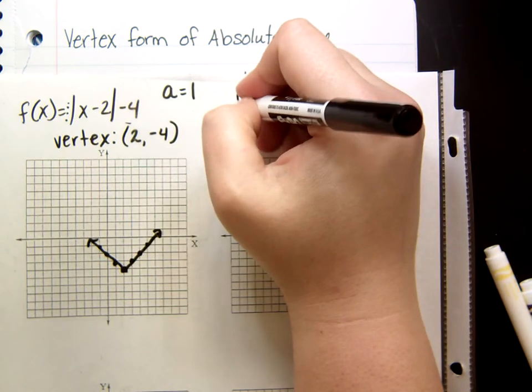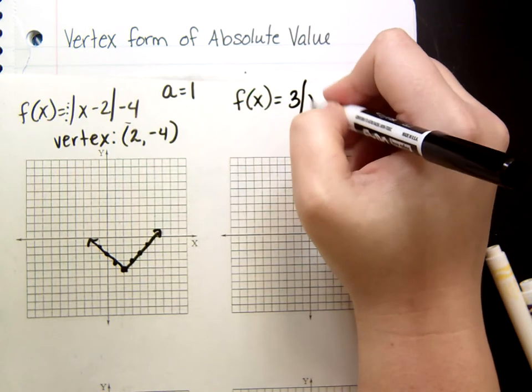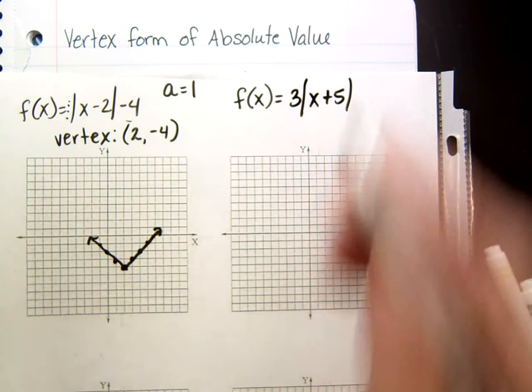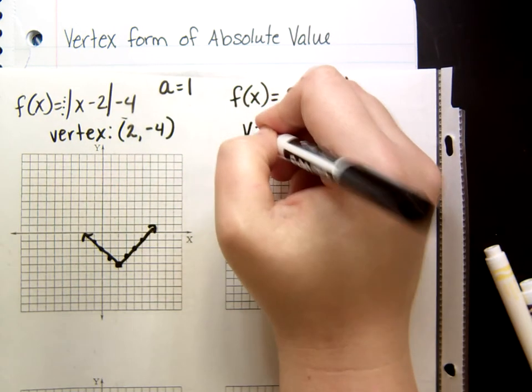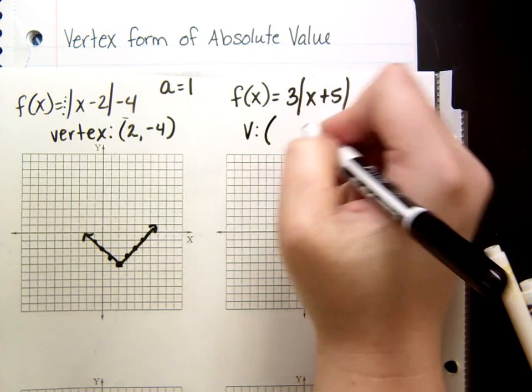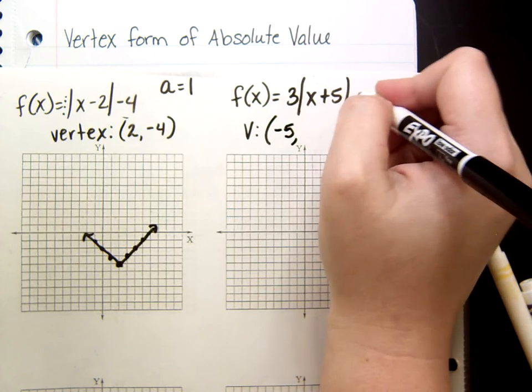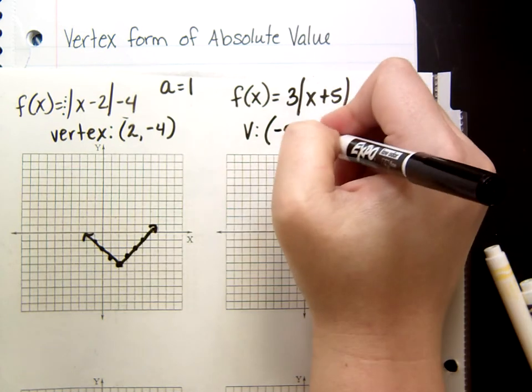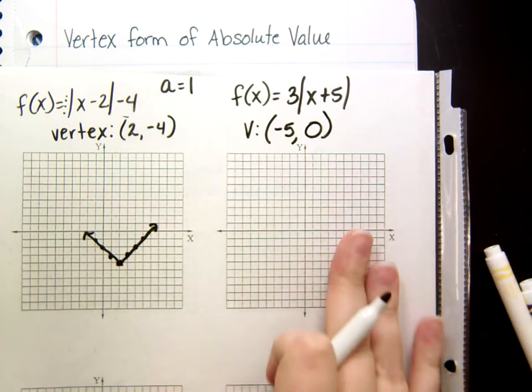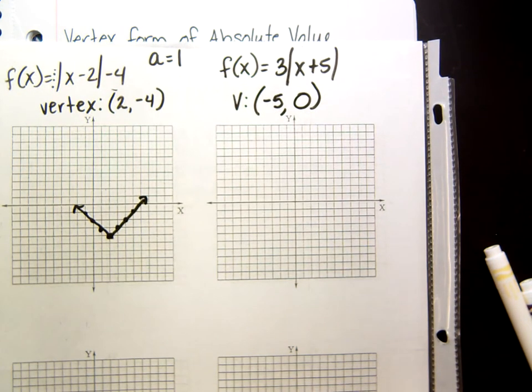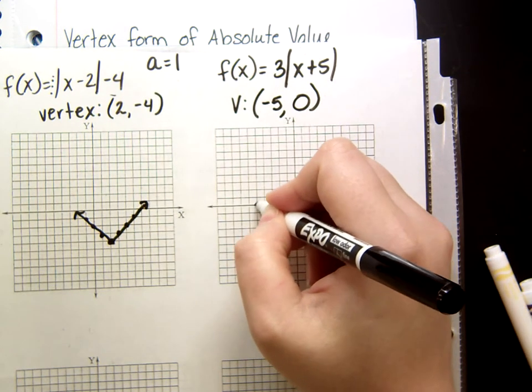So, what about this one? An absolute value of 3x plus 5. For the vertex on this one, well, we have a positive 5, so we make it negative for the vertex. But there's nothing added on the outside. So, this means that value is 0. So, what I'll do is go ahead and plot my negative 5, 0. 1, 2, 3, 4, 5. There we go.